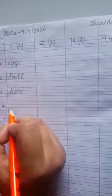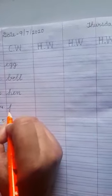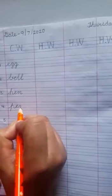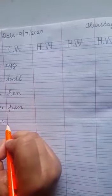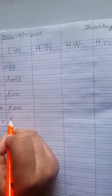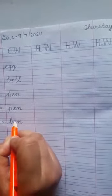Number 4 pen and the spelling of pen is P E N pen and the last number 5 that is bin. The spelling is B I N bin.